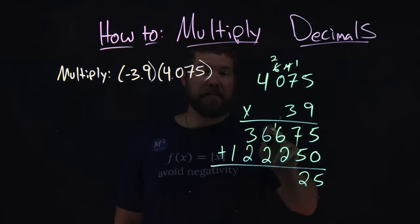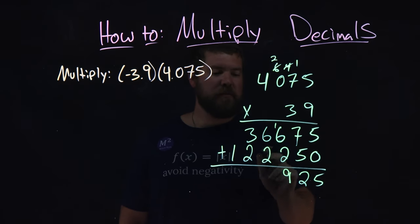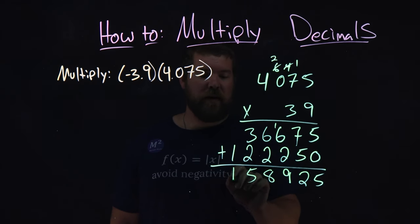6 plus 1 is 7, plus 2 is 9. 6 and 2 make 8. 3 and 2 make 5. And good old 1 is by itself.